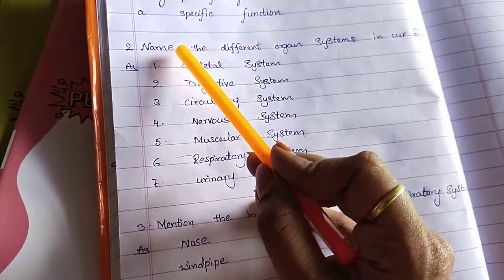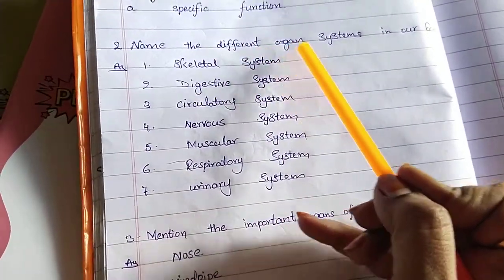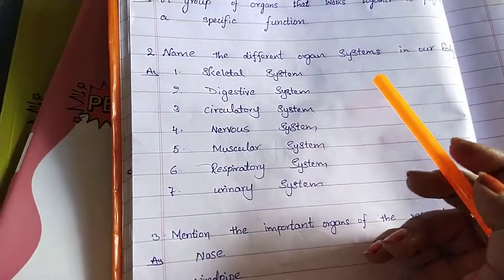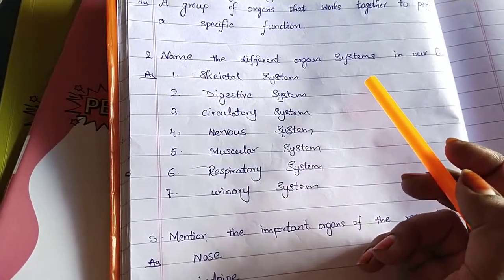Second question, name the different organ systems in our body. We are having seven organ systems.